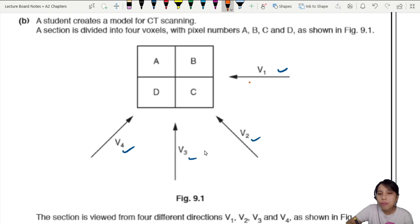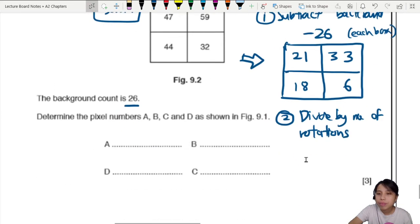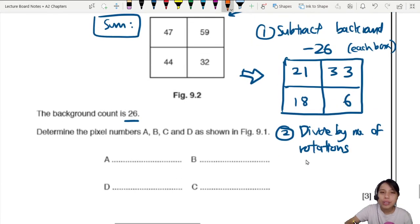Rotation is from view one, you rotate. This is first rotation. Then rotate second time. Then rotate third time. So in total, three rotations between the four views. One, two, three. So we will divide by three by the number of rotations.